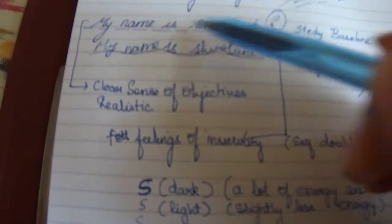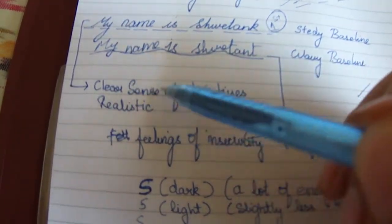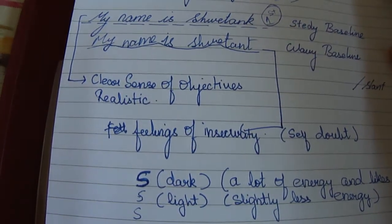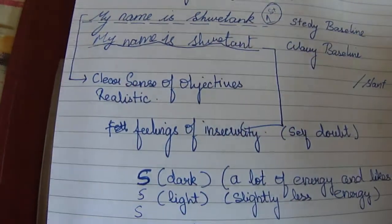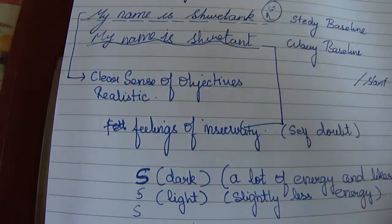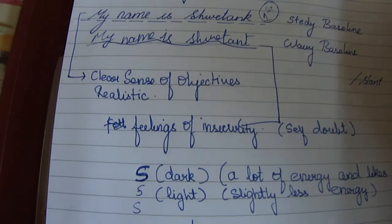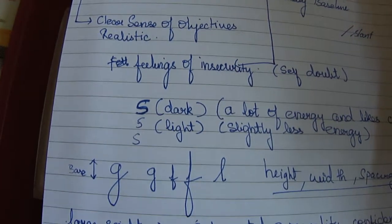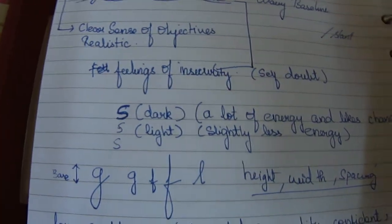If the baseline is stable, it also means that you have a clearer sense of objectives and you're likely to be more realistic. Whereas a bit of wavering can mean that the person is feeling a bit insecure and can have self-doubt at times. We'll also understand another concept of handwriting analysis, which is the darkness and lightness of handwriting.